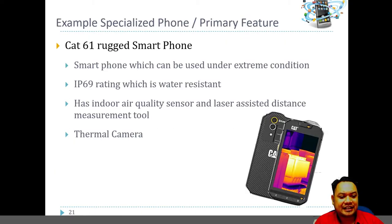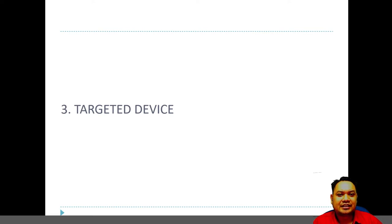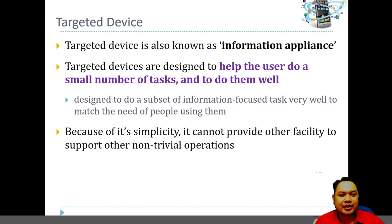The primary feature means a particular device may have an obvious industrial or hardware design catered to focus specifically on that feature. Now let's look into targeted devices. A targeted device is almost similar to a device with a primary feature, except that the device is solely developed to achieve a single function — it does not even have add-on features. Targeted devices are sometimes also known as information appliances. They are designed to help users do a number of tasks well and specifically. Because of this simplicity, they cannot provide facilities for other non-trivial operations such as making calls or sending SMS messages, and even then the functionality is very limited.